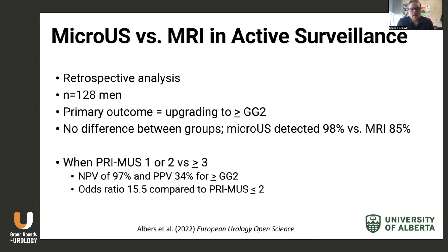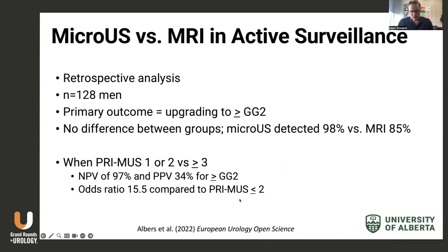So how is micro-ultrasound used in active surveillance? We did a retrospective analysis looking at 128 men undergoing either confirmatory or surveillance biopsy. The primary outcome was upgrading to Gleason grade group 2. We found no difference between groups, with micro-ultrasound detecting 98% of upgrades and MRI detecting 85% of upgrades to Gleason grade group 2 or higher. When comparing accuracy, a negative Primus score yielded a negative predictive value of 97% and a positive predictive value of 34%, with an odds ratio of about 15 for detecting grade group 2 or higher when Primus is positive.